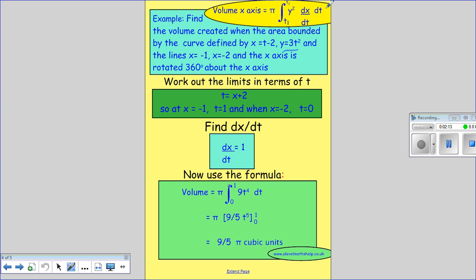So we have this and then we want to integrate. Remember when you integrate you add 1 to the power divided by the adjusted power, so this is 9/5 t⁵ between 0 and 1 times π.